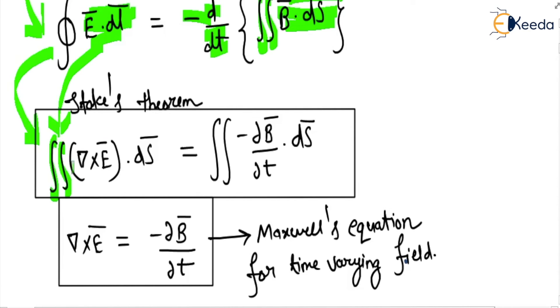So the surface integration del cross E dot ds is equal to double integration minus del B over del t dot ds. So when we compare these two equations then del cross E is equal to minus del B over del t.